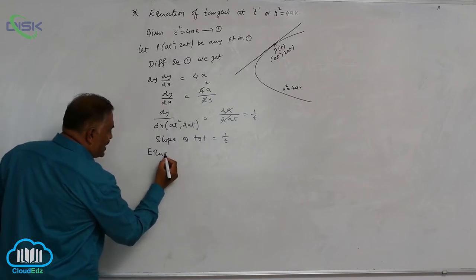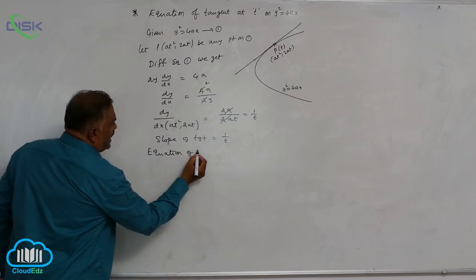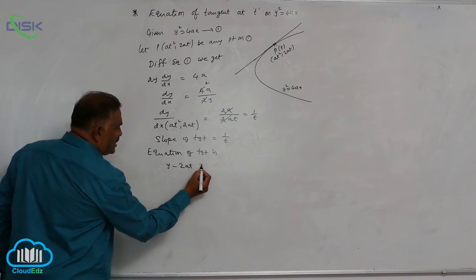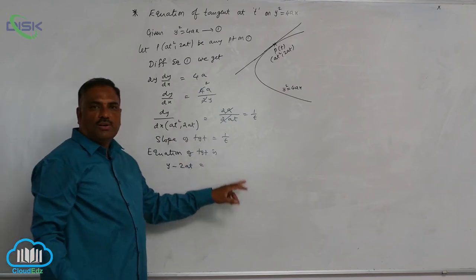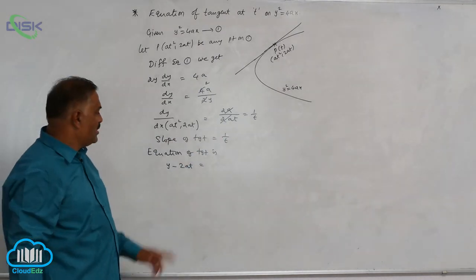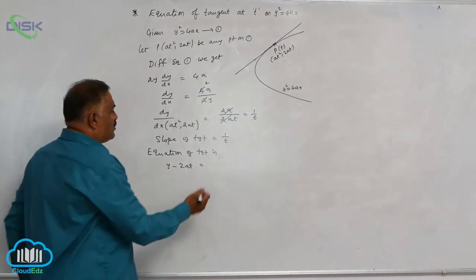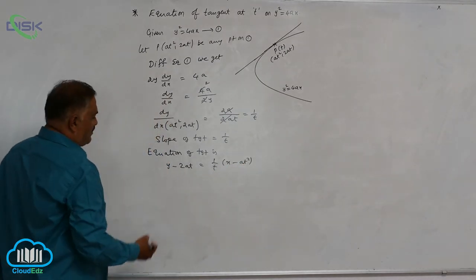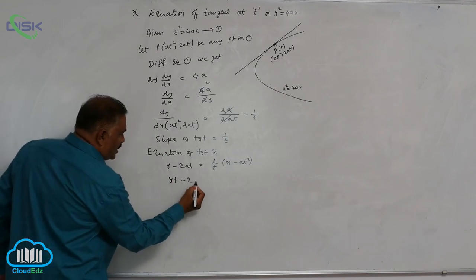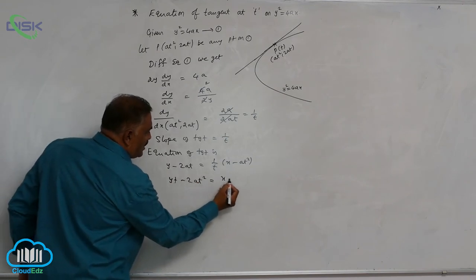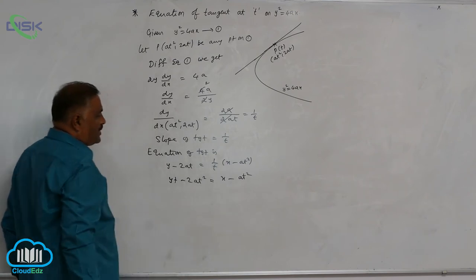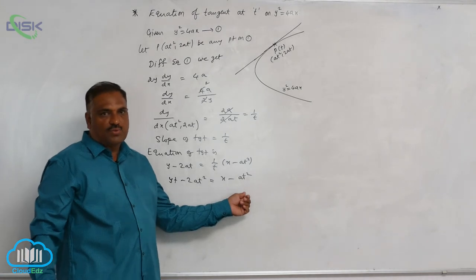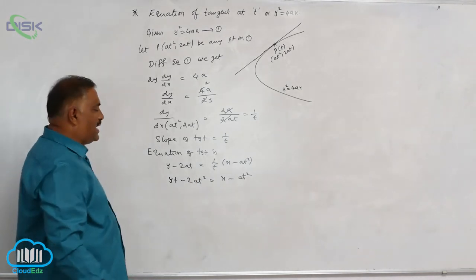So equation of tangent is y minus 2at is equal to, once you know the point and slope, slope point formula we can use. Y minus y1 is equal to slope into x minus at square. Cross multiplication: yt minus 2at square is equal to x minus at square. You observe that here minus 2at square is there, here minus at square is there. You can take subtraction.